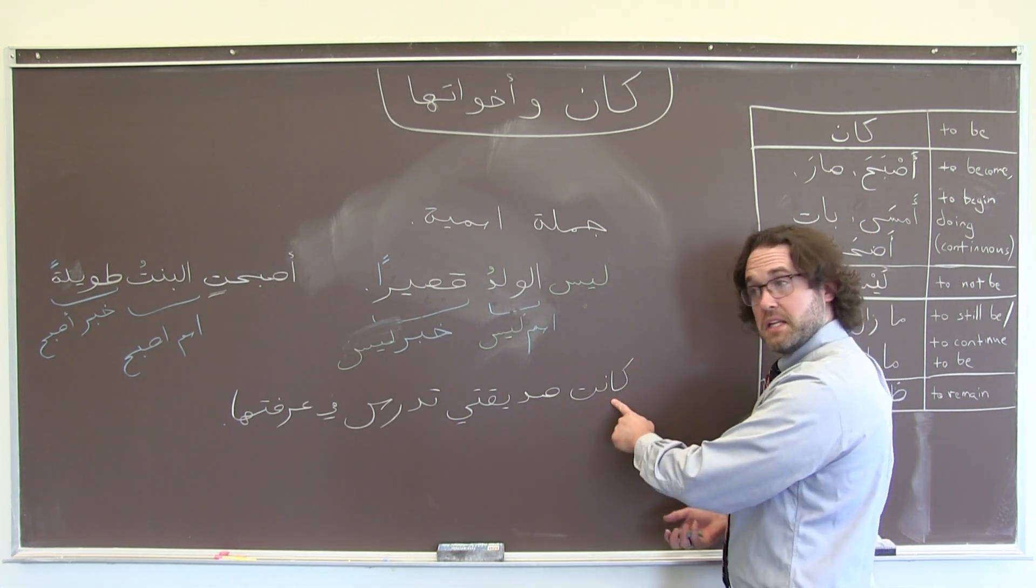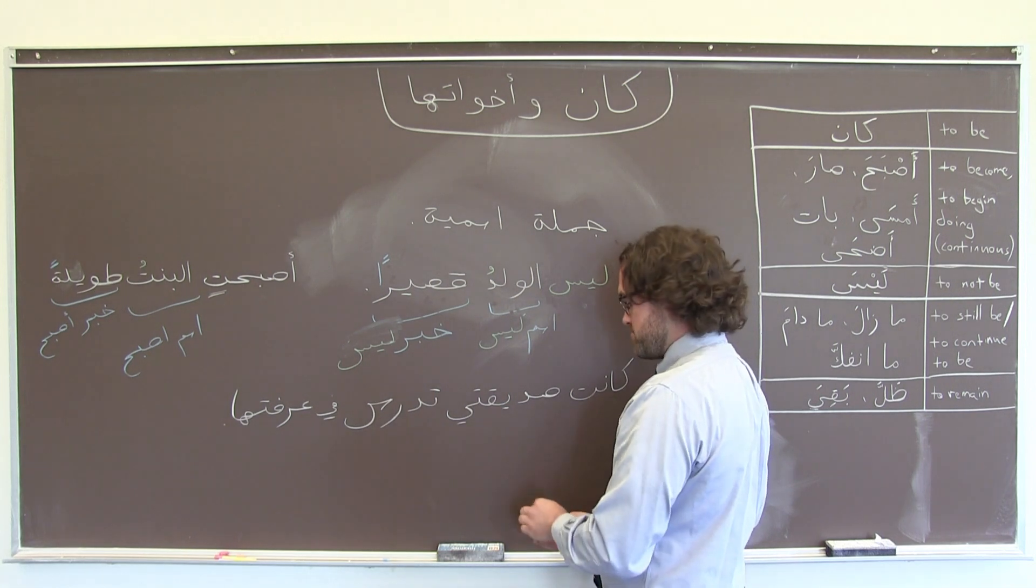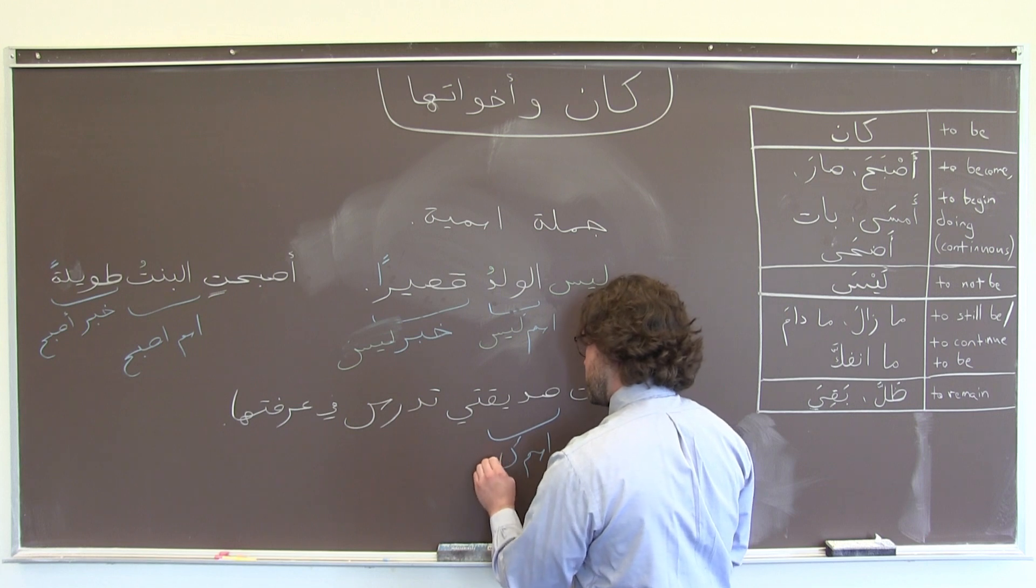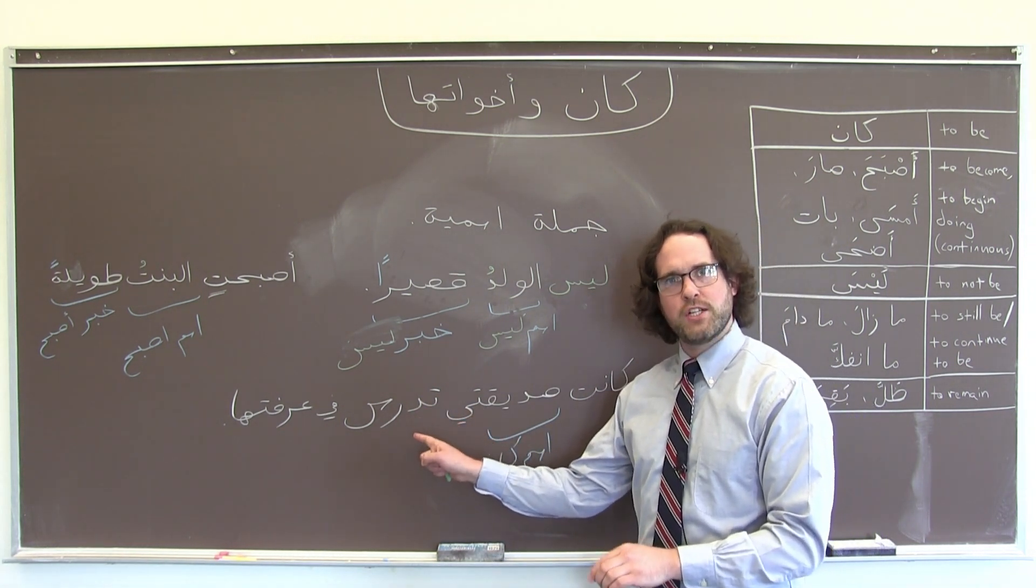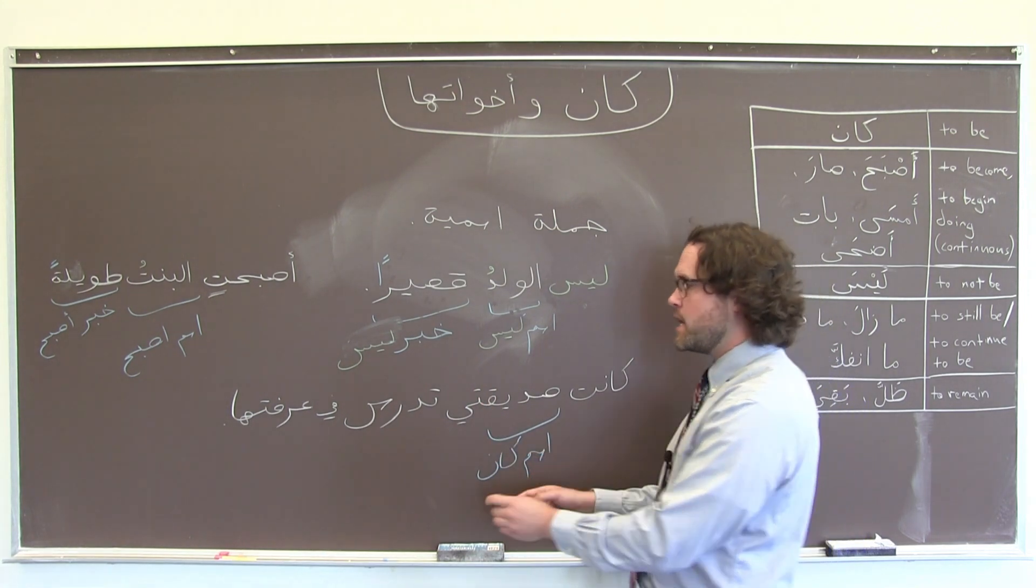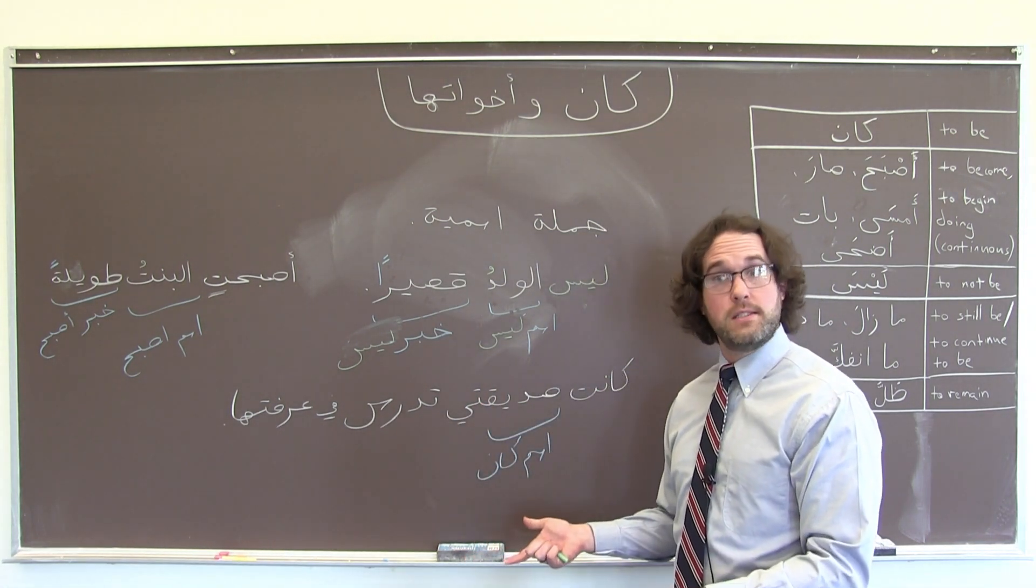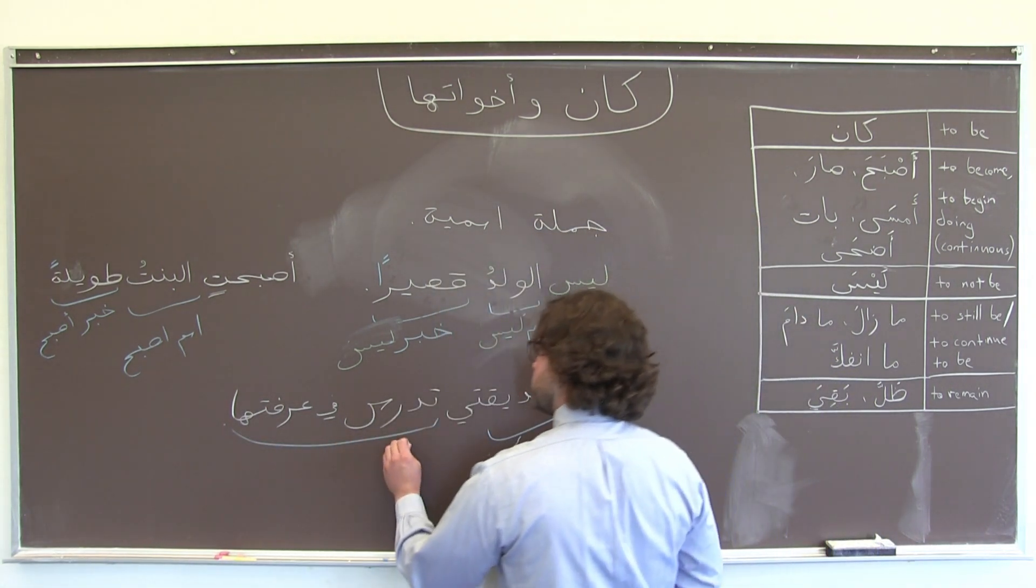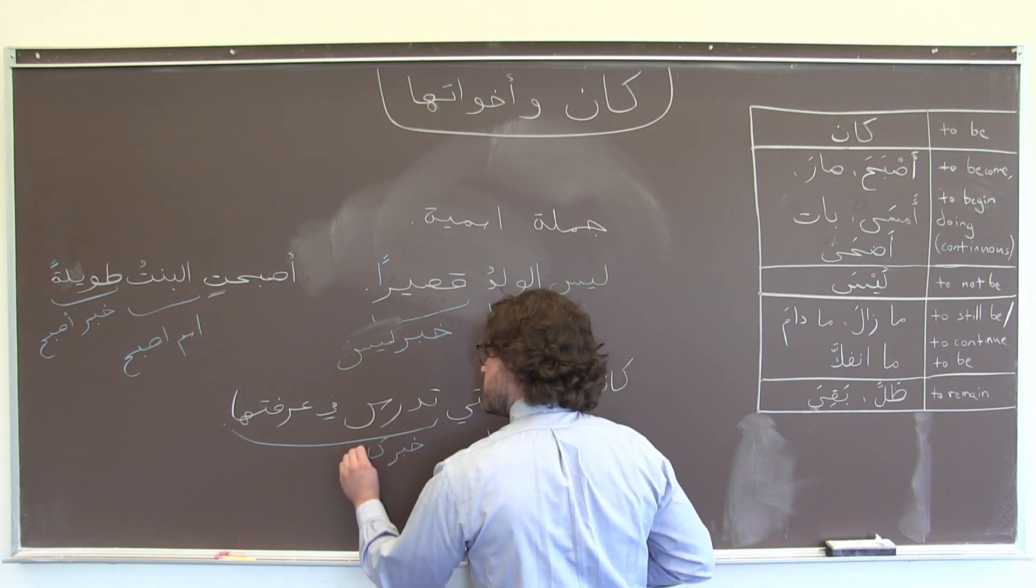كانت صديقتي تدرس في غرفتها. Here I have كان, my verb, and then صديقتي is going to be اسم كان. But here I don't have a noun or an adjective, a direct object. I have instead a whole جملة فعلية, a verbal sentence, which is considered خبر كان.